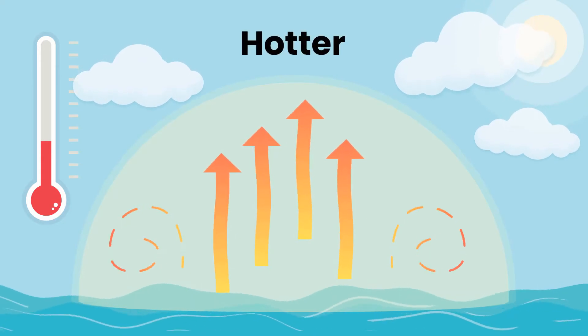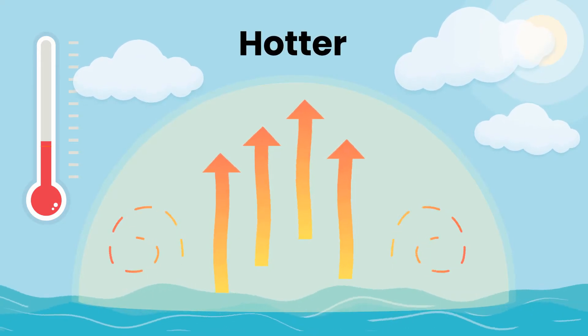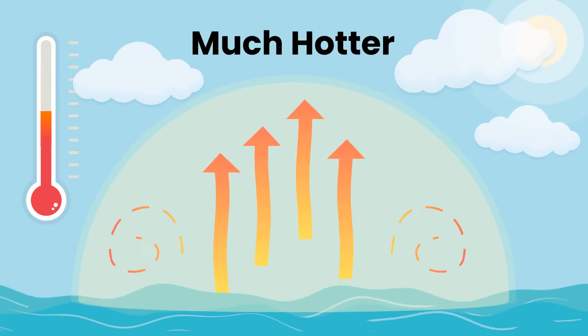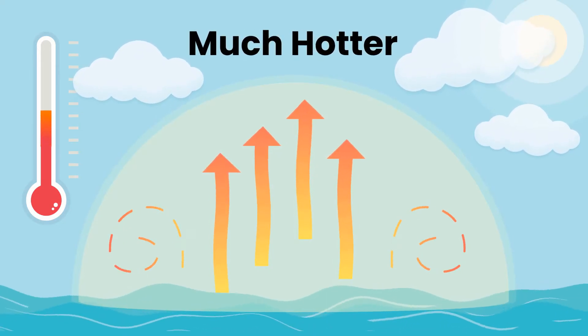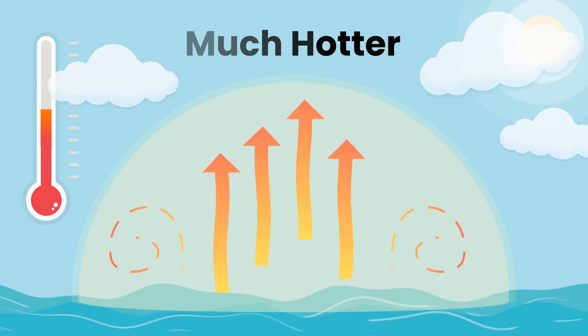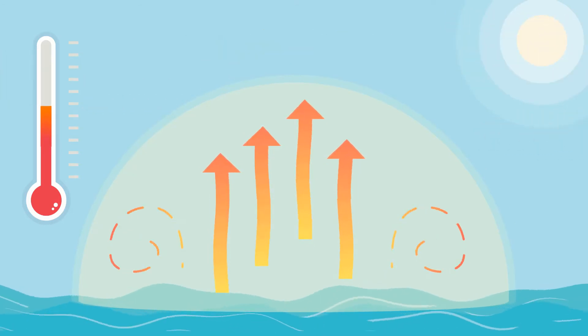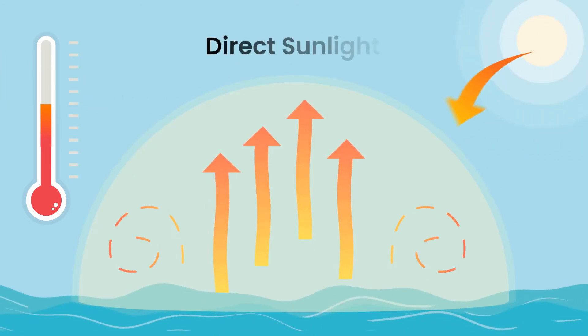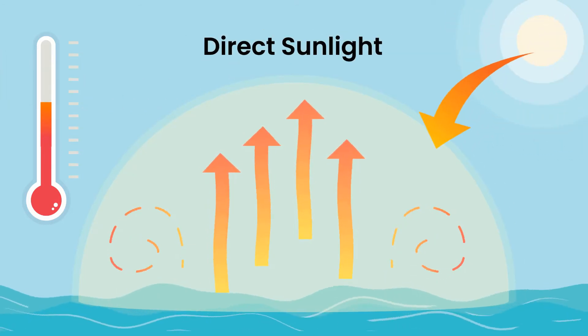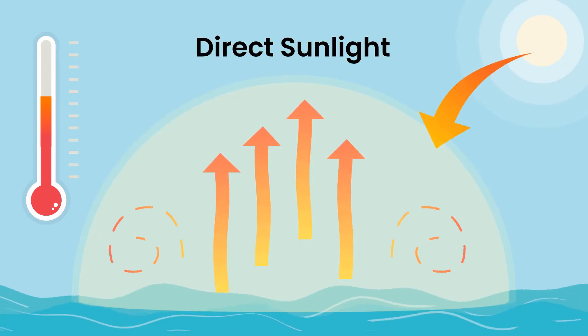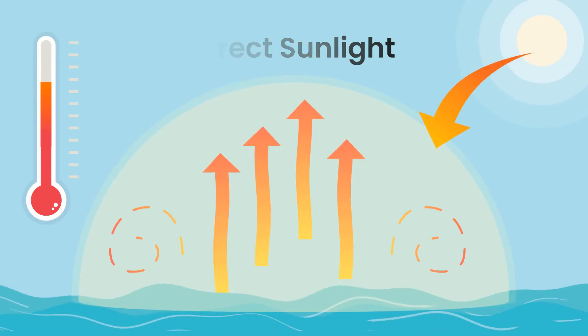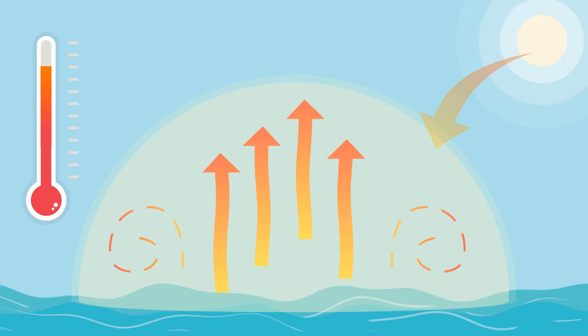But it doesn't stop there. It gets much hotter because this heat dome doesn't allow clouds to form. So direct sunlight is cast upon the earth's surface, and the hot air inside the heat dome gets much, much hotter. This occurrence is called the heat wave.